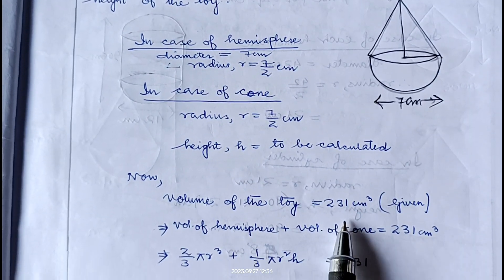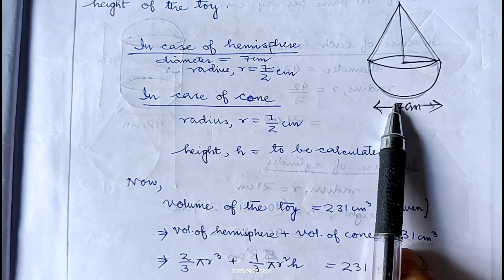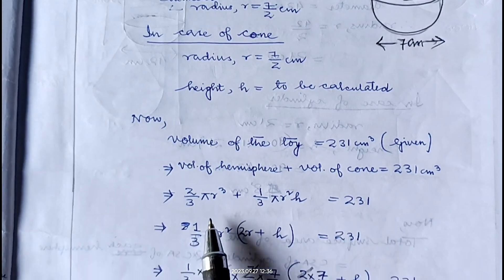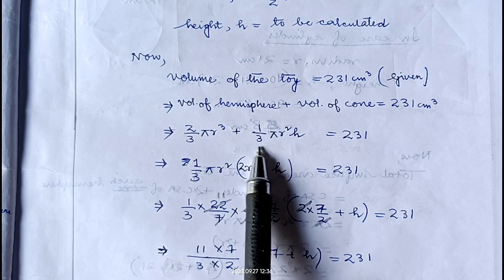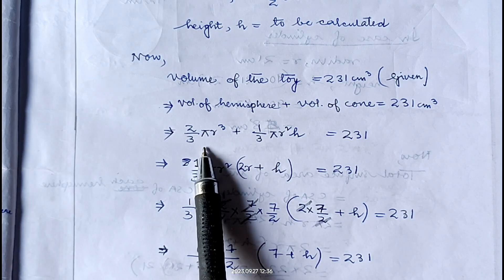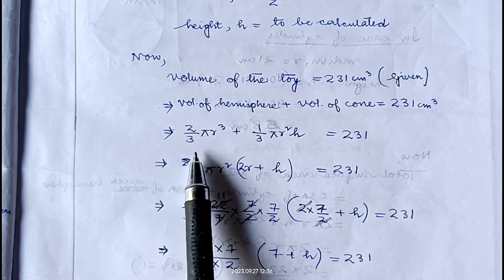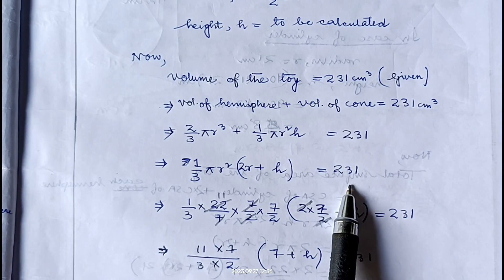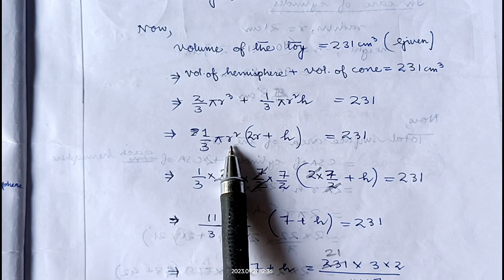Volume of the toy is 231 centimeter cube. Volume of the toy equals volume of cone plus volume of hemisphere: (1/3) pi r squared h plus (2/3) pi r cubed equals 231. Taking (1/3) pi r squared common, we get (1/3) pi r squared into (2r plus h) equals 231. Pi is 22/7, radius is 7/2, so substituting these values.